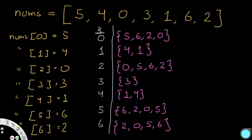Now here's the key observation. All the sets of length 4 contain the exact same numbers: 5, 6, 2, and 0 — just in a different order with different starting points. The sets at k=0, 2, 5, and 6 all start at different values but have the same numbers. Why is this? They all start at different values — 5, 0, 6, and 2 — but the lengths are always 4. The explanation is simple: we have a cycle.